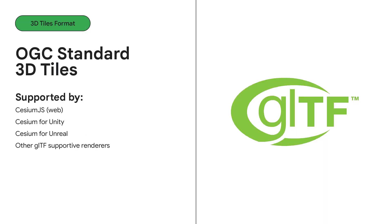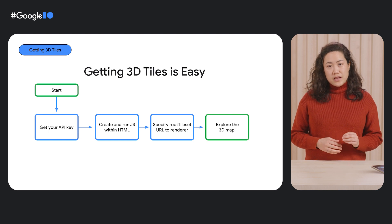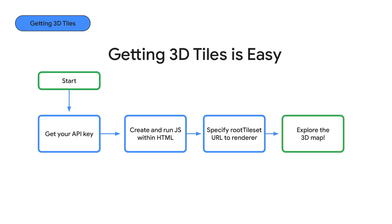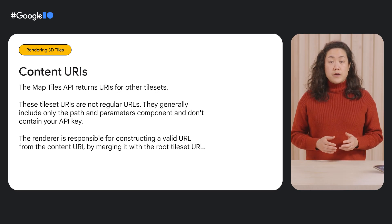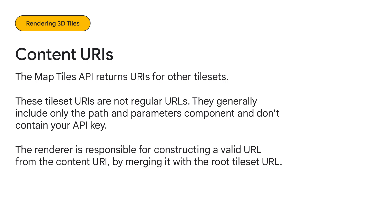This direct access gives you the flexibility to design visual interfaces and interactions unique to your brand and functional design requirements. The 3D Tiles is easy to get started. Once you have your API key, you can begin accessing the tiles by creating and then running JavaScript within an HTML file. You then specify a root tileset URL to a 3D tiles renderer of your choice. After that, all subsequent calls for tiles are automatically made by the renderer as the end user simply explores the map. When serving 3D tiles, the Map Tiles API returns URIs for other tilesets. These tileset URIs are not regular URLs — they generally include only the path and parameters component and don't contain your API key. The renderer is responsible for constructing a valid URL from the content URI by merging it with the root tileset URL.